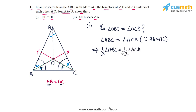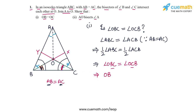Since angle ABC equals angle ACB, their halves must also be equal. Half of angle ABC is angle OBC, and half of angle ACB is angle OCB. Therefore angle OBC equals angle OCB. Because these two angles are equal, the sides opposite them in triangle OBC must be equal. OB, which is the side opposite angle OCB, must equal OC, which is the side opposite angle OBC — since sides opposite equal angles are equal.